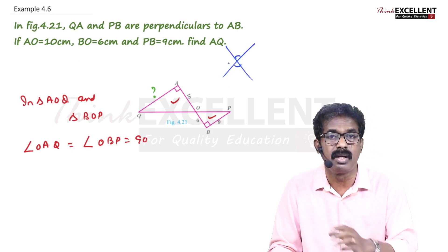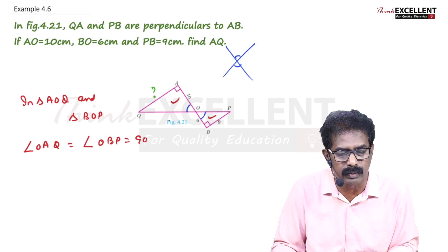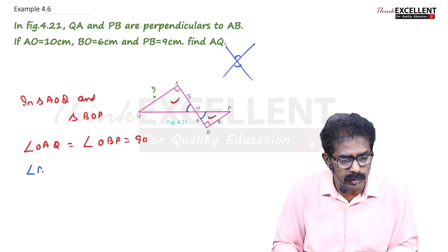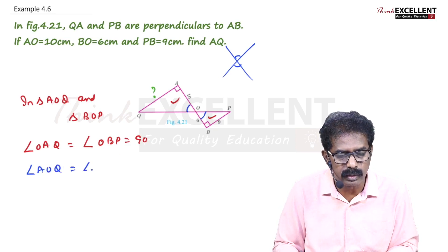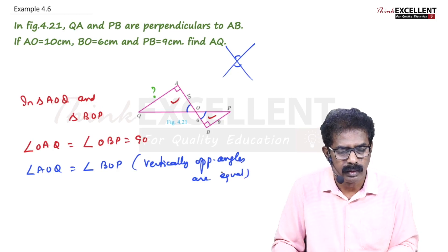The reason is vertically opposite angles. So same way here, you can say these two angles are equal. Angle AOQ equals angle BOP. Reason: vertically opposite angles are equal.